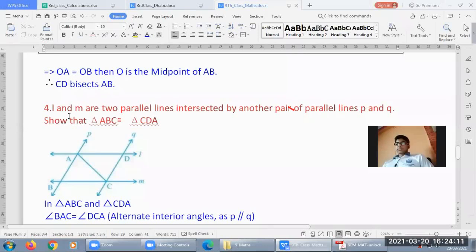Next we will do: L and M are two parallel lines intersected by another pair of parallel lines P and Q. Show that triangles ABC and CDA are congruent.